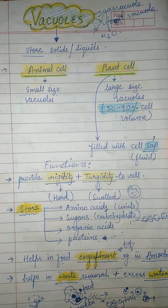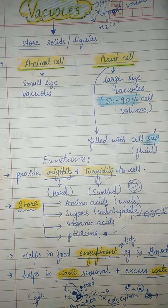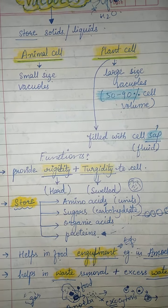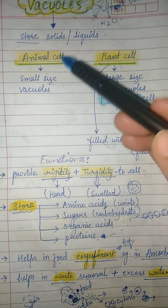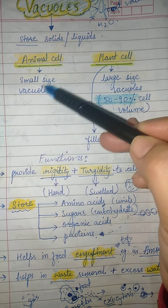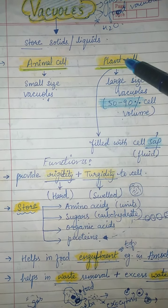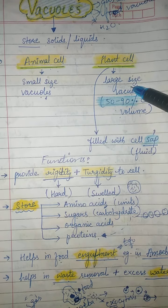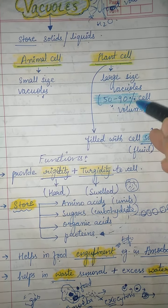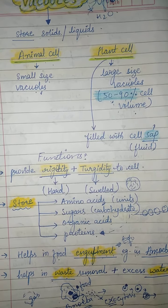If we compare vacuoles in animal cells and plant cells — as discussed in the previous lecture — in animal cells the vacuole is smaller in size and larger in number. Plant cells have a large-sized vacuole, covering 50 to 90 percent of the cell volume.